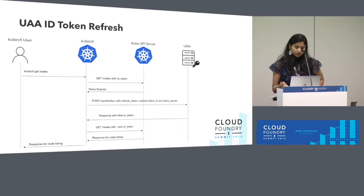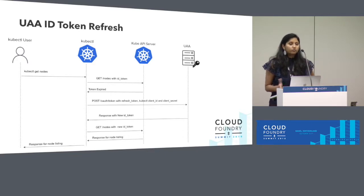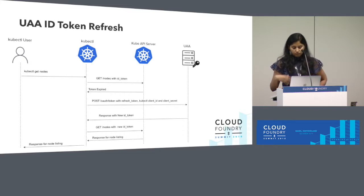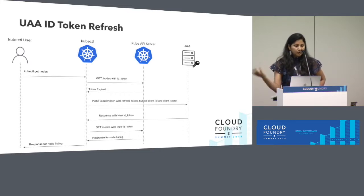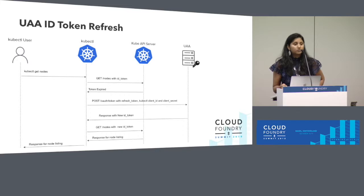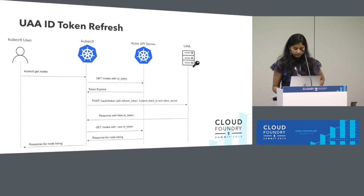This comes in handy when dealing with offline access — the user is probably not in the picture, you're running an automation scenario, and you are dealing with longer-lived access. This is where the refresh token flow is useful.